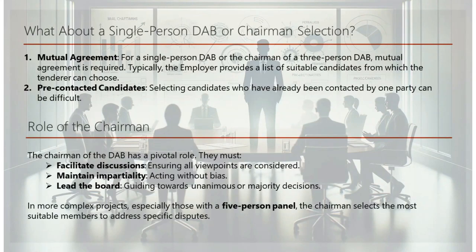For a single-person DAB or the chairman of a three-person DAB, mutual agreement is required. Typically, the employer provides a list of suitable candidates from which the tenderer can choose. However, selecting candidates who have already been contacted by one party can be difficult, as this is a common challenge in the appointment process.